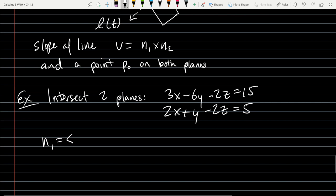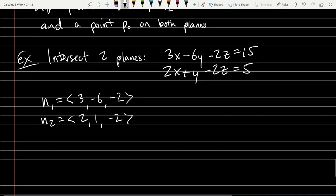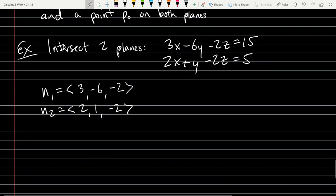So n1, normal 1 is going to be <3, -6, -2>. And n2 is <2, 1, -2>. I'm just taking the coordinates off of the x, y, z terms.